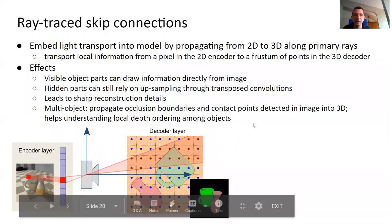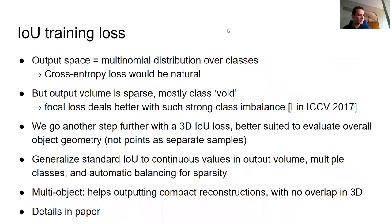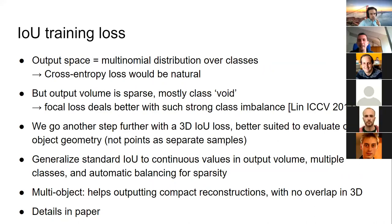The input becomes RGB image and camera matrix. We call the model multiple times for high resolution, get our PDF predictions, and reconstruct meshes. For the training loss: the output space is incredibly sparse — more sparse than 2D object detection, with most points being void. This leads to class imbalance. We tried focal loss to compensate, and we also modified the standard 2D object detection IOU loss to work in this multi-class 3D world, which further improved results.